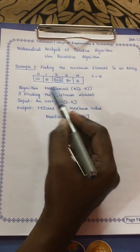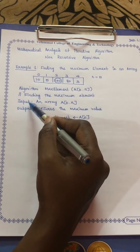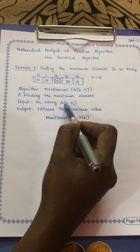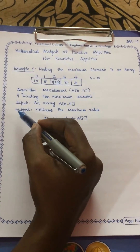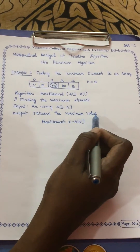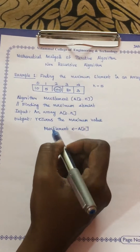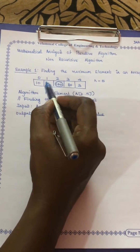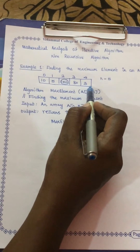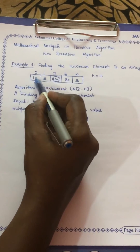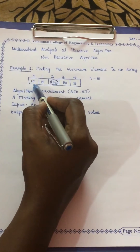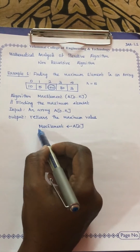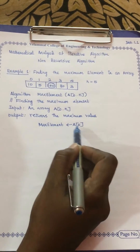Every algorithm has two important things: input and output. The input here is an array A of index 0 to n, and the output returns the maximum value. We start with the first step: since we don't know which element is maximum among these five numbers, by default we assume whatever is in the 0th position is the maximum element.